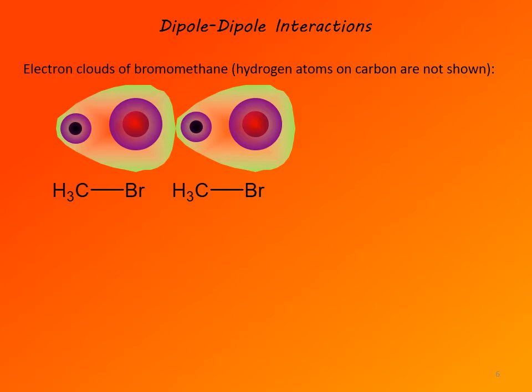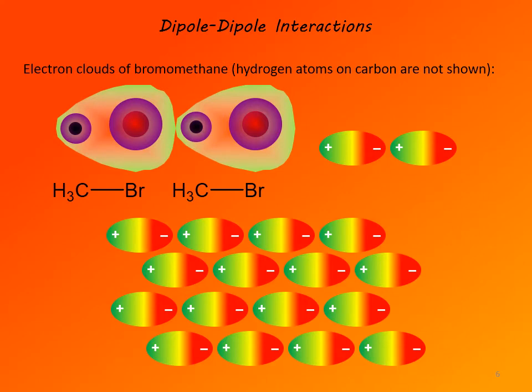Now we can consider dipole-dipole interactions. Dipole-dipole interactions are the principal intermolecular interactions between polar molecules. Using bromomethane as an example of a typical organic polar molecule, the carbon-bromine bond shows distortion of the electron cloud, with bromine being the negative end of the dipole and carbon being the positive end. Dipole-dipole interactions are interactions where such molecules orient themselves so that the positive end of one dipole is surrounded by as many negative ends of other dipoles as possible, and vice versa.